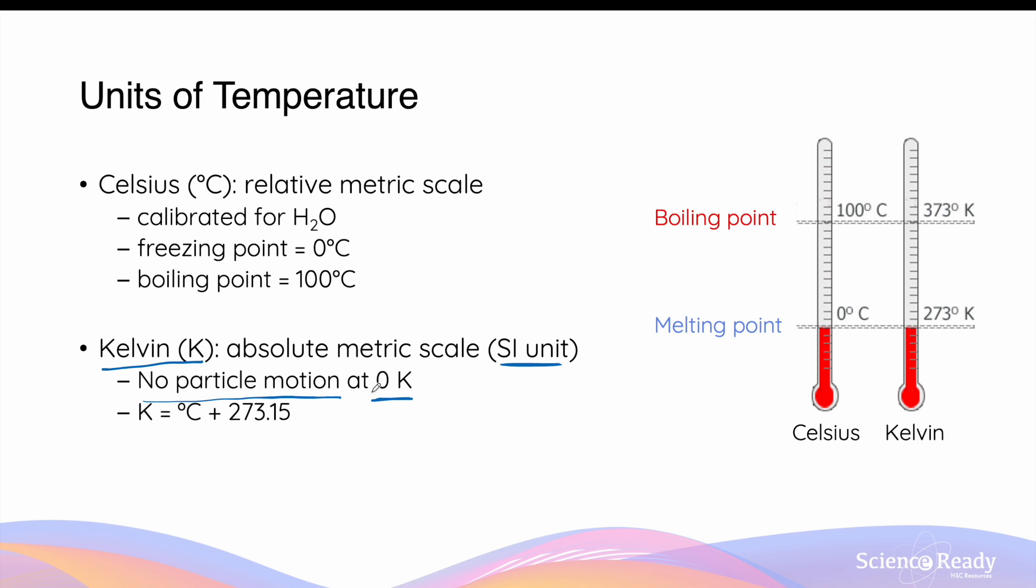Therefore, the lowest possible temperature in the unit of Kelvins will be 0 Kelvin. To convert degrees Celsius into temperature in Kelvins, we simply add 273.15.